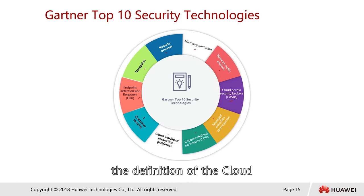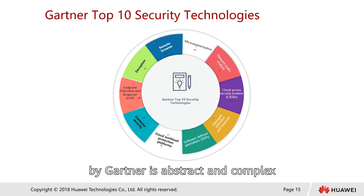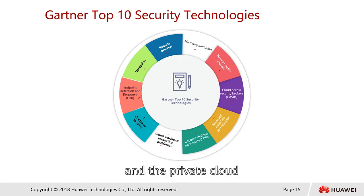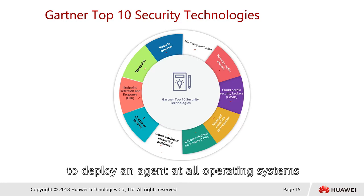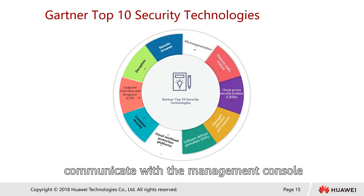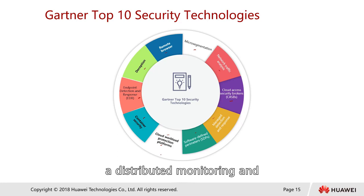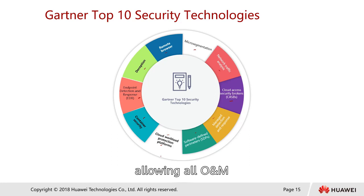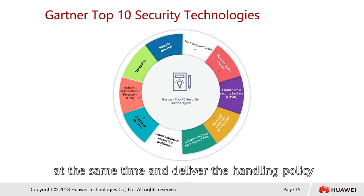Let's talk about the features. The definition for Cloud Workload Protection Platforms (CWPP) provided by Gartner: in simple terms, CWPP is a platform that protects services running on the public cloud and the private cloud. The current practice is to deploy an agent at all operating systems of the services to communicate with the management console, forming a distributed monitoring and centralized management client-server architecture.